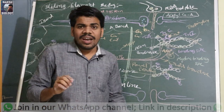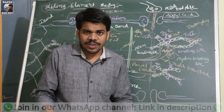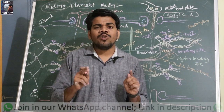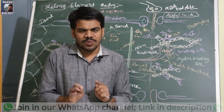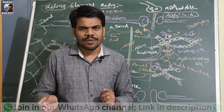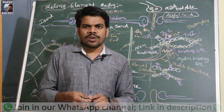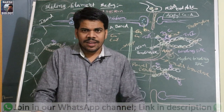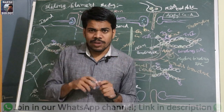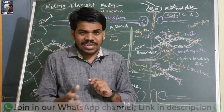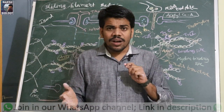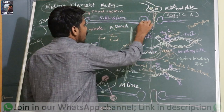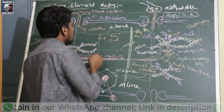When nerve impulses stop, the sarcoplasmic reticulum is no longer releasing calcium. The calcium ions already present in the sarcoplasm go back into the sarcoplasmic reticulum. Calcium ions are not utilized completely — they are not eliminated. The calcium that was released and bound is reusable and goes back into the sarcoplasmic reticulum via calcium pumps. The reuptake of calcium is an active process.